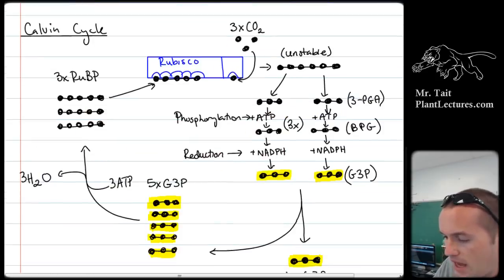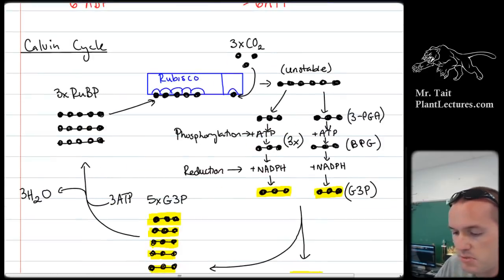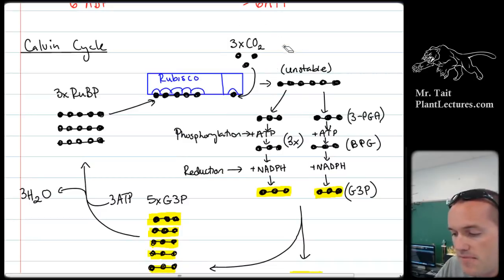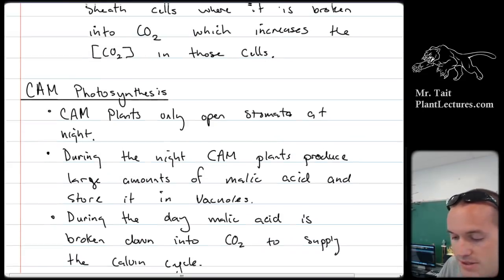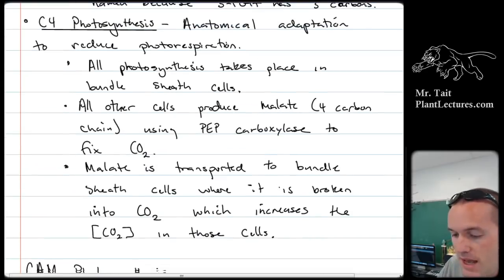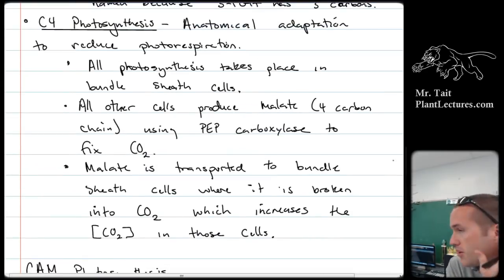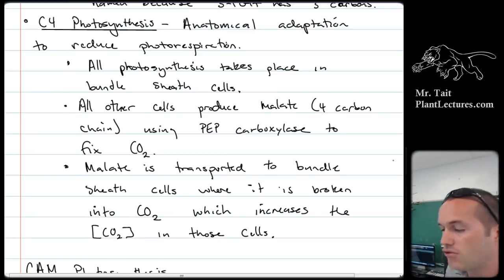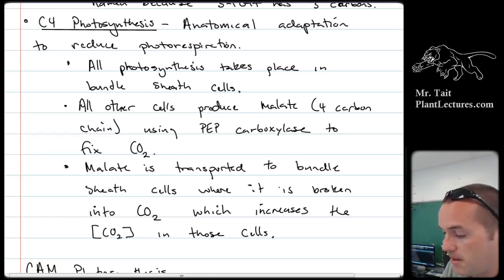There is a problem that can happen with the Calvin cycle where rubisco picks up an oxygen molecule instead of carbon dioxide. This is called photorespiration, and it's bad. There are special plants — CAM plants and C4 plants — that have evolutionary adaptations to prevent photorespiration. These plants are prevalent in areas that are hot and dry, because that's when you have to keep your stomata closed and oxygen can build up.